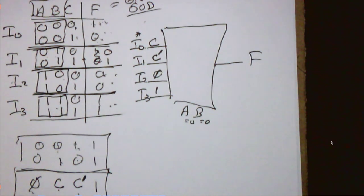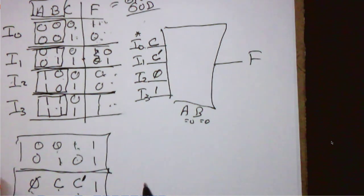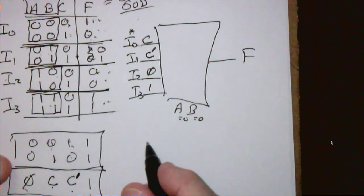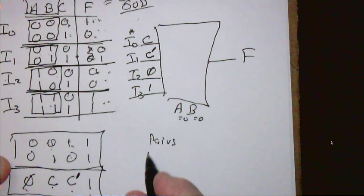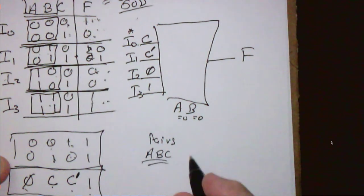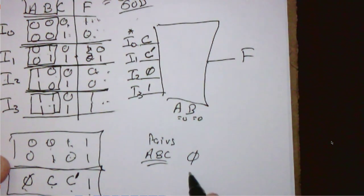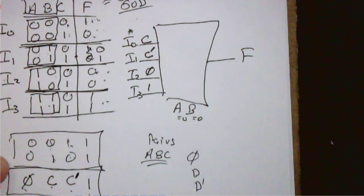What do you do with an 8-to-1 mux? It's exactly the same thing. Instead of 4 rows we have 16 rows; we divide them up into pairs. Each row corresponds to the same A, B, C. Then we just have to decide whether we're putting in a constant 0, a D, a D-prime, or a constant 1 — because our variables are A, B, C, D.